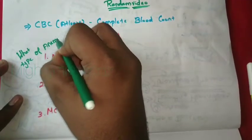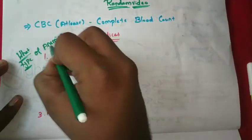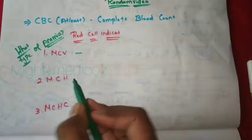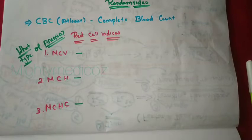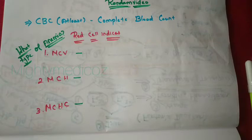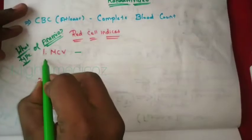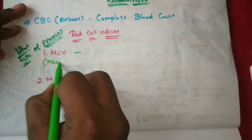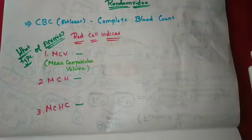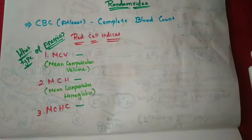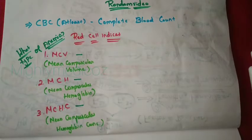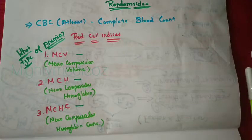Let me explain the three red cell index abbreviations. MCV stands for Mean Corpuscular Volume. MCH stands for Mean Corpuscular Hemoglobin. MCHC stands for Mean Corpuscular Hemoglobin Concentration.